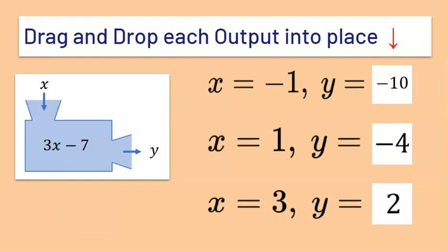Check your answers. If you put negative 1 in place of x, 3 times negative 1 minus 7 equals negative 10. If you take 1 and put it in place of x, 3 times 1 minus 7 is negative 4. And if you take 3, 3 times 3 minus 7 gives an output of 2. So your values for y were negative 10, negative 4, and 2 in that order.